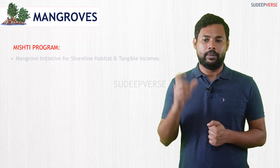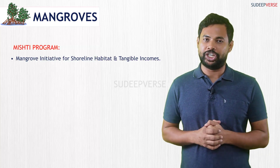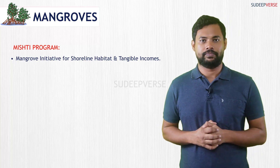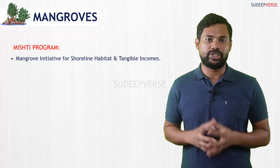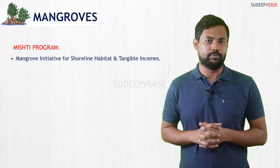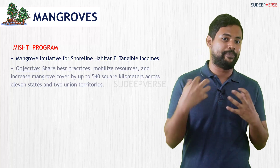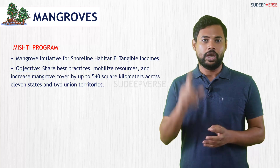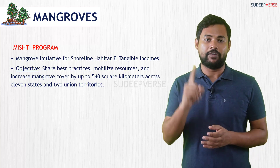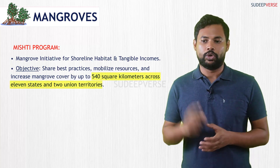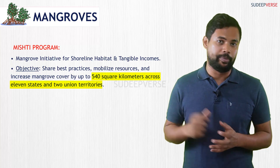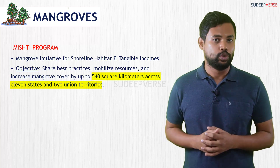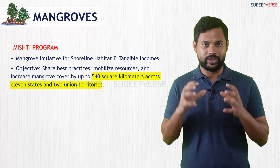Coming to the program announced in the Budget of 2023, that is MISHTI — Mangrove Initiative for Shoreline Habitats and Tangible Incomes. The objective of this program is not only to share best practices and mobilize resources, but also to improve mangrove cover up to 540 square kilometers along 11 states and 2 union territories.